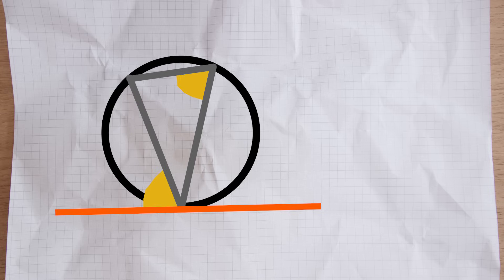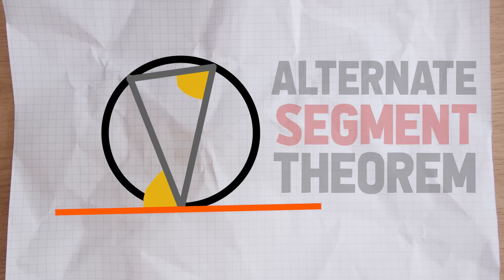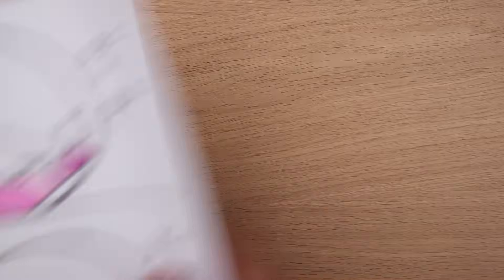So this angle is equal to this one, this angle is equal to this one, and this angle is equal to this one. Inside, opposite, outside. We call that the alternate segment theorem. Pause the video, see if you can find the missing angles in the following questions, and I'll be back in just a moment.